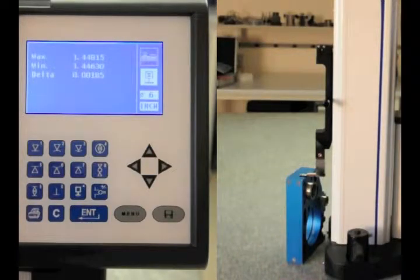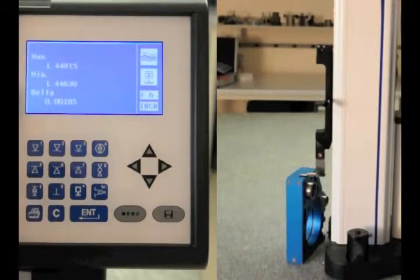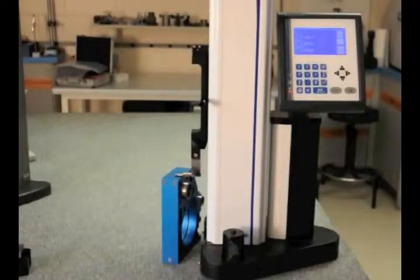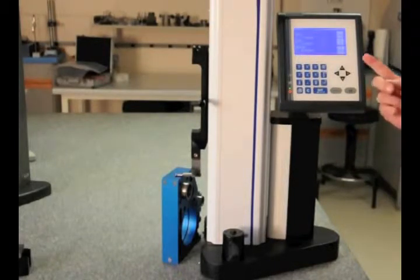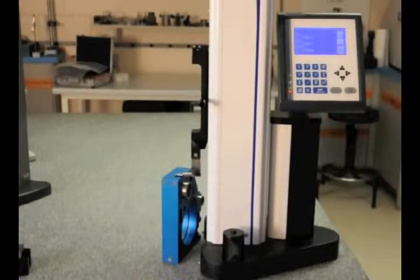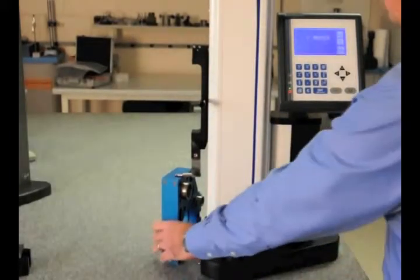If I hit clear, now it's going to give me the maximum number, the minimum number, and the delta, or the max minus the min. Now you can use that on a cylinder as well. If between centers, you put load on it, turn it one time, it'll give you the min, max, and delta of that cylinder. That's a very nice feature to have there. If I hit clear again, it takes me out of that mode, and I'm back into basic measuring mode.